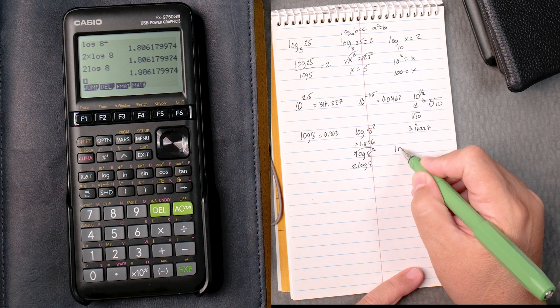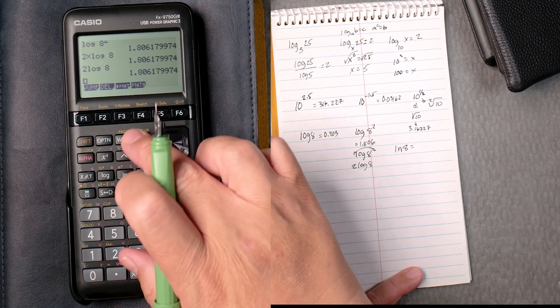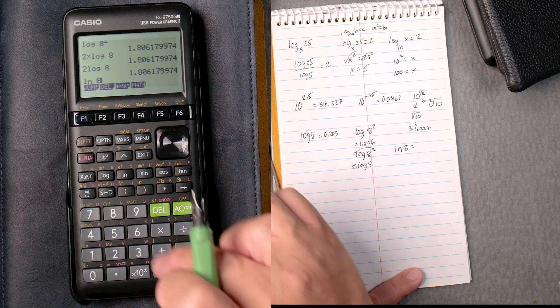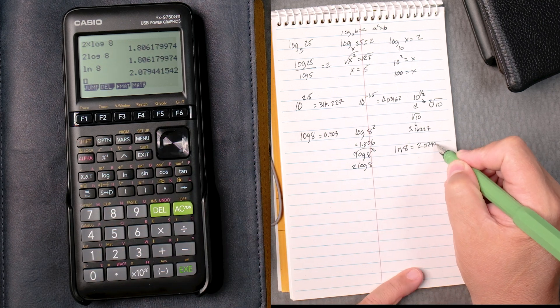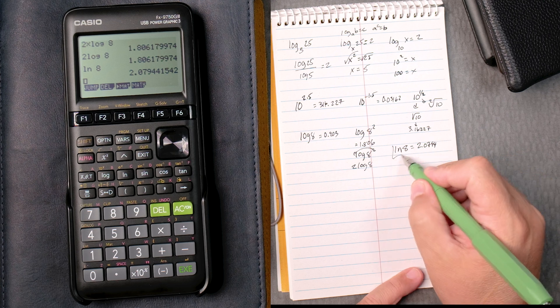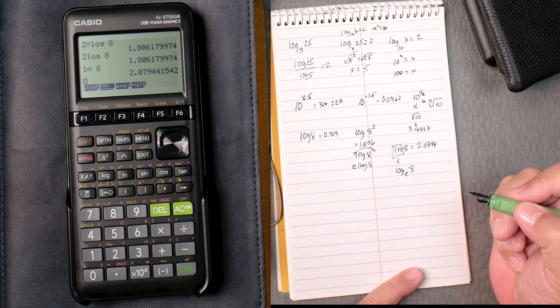And then you have the natural log of 8. So we press natural log, type in 8, execute, 2.0794. Natural log is really the log of base e.